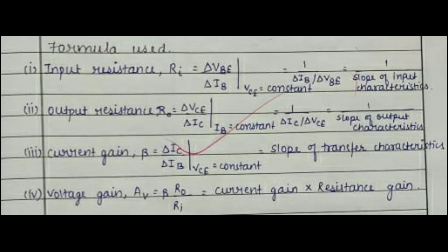This image shows the formula that is going to be used for input resistance, output resistance, current gain, and voltage gain. Watch this image carefully because this is the main thing upon which your practical is going to be based. If you use the wrong formula, then you will get the wrong results and this practical will be completely wrong.